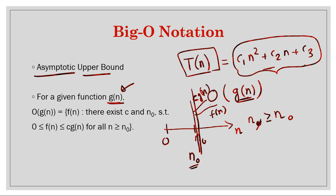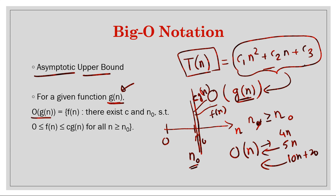Many functions can have the same Big O. For example, if we have O(n), then the function 4n is also O(n), 5n is also O(n), and 10n+20 is also O(n). So O(g(n)) is a set of all functions such that there exists a constant c and some input size n0 such that for all n greater than n0, c·g(n) is always greater than or equal to f(n). Once we find c and n0, we can define the Big O of that g(n).